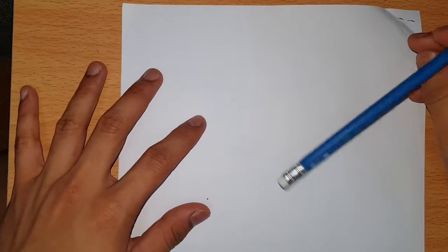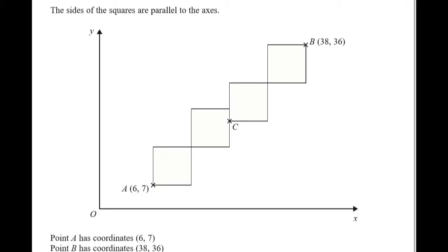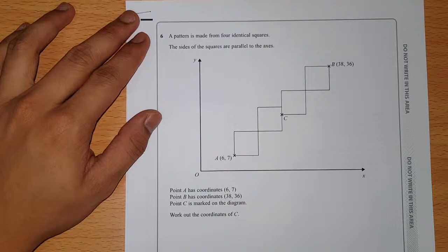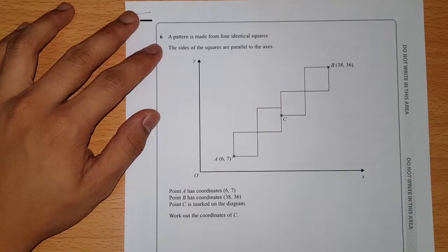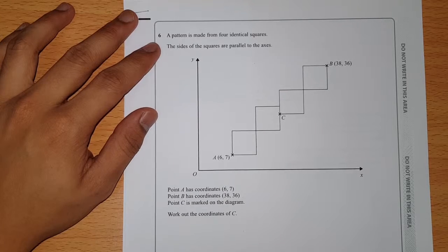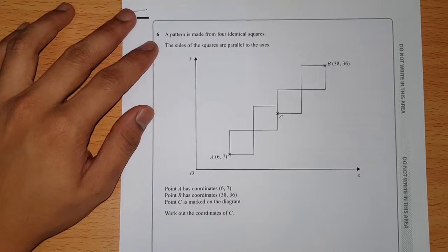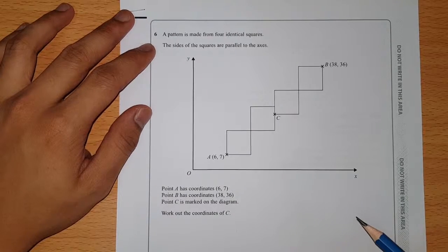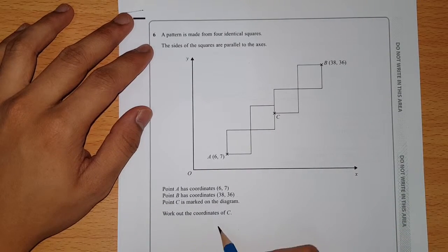Hi guys, welcome back to my channel. Today we are going to do the GCSE past paper at Excel 2018. I only chose the questions that are five marks because I think some of you guys are having trouble answering them. So let's start now. For every question in here I want you guys to at least try, so pause the video and then try. If you have done this before, you can just continue answering the questions.